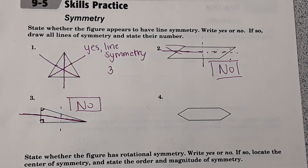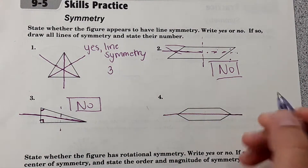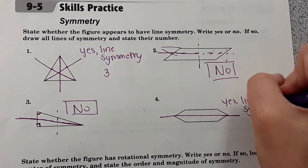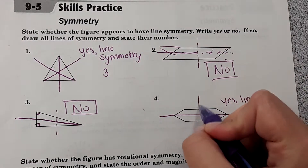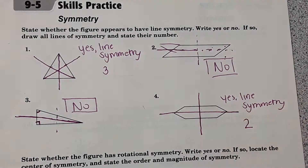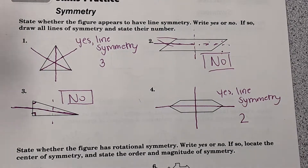Number four — you could draw a line here and it would reflect onto itself, so yes it does have line symmetry. You could also draw a line here and it would reflect onto itself, so it has two lines of symmetry.